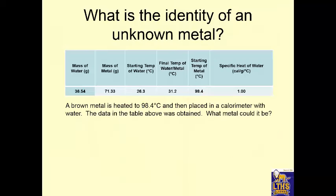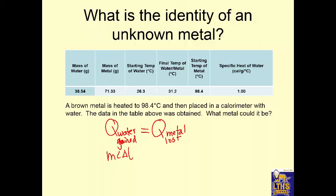We can look at a reference table to identify what metal it is based on its specific heat. We put a brown metal, heat it to 98.4°C, then place it in the calorimeter with water and obtain data. We'll find the specific heat using MC·ΔT for water and MC·ΔT for the metal, then plug in to find what's missing and identify the metal in class.